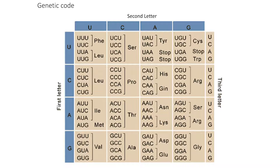This is what the genetic code looks like — always presented as a table. There are three parts to every codon, these triplets: GUU, GUC, GUA, GUG all encode the amino acid valine. AUG, a very important one, encodes methionine — all proteins start with that, as you'll see in a moment. And then there are some codons that don't code for anything: UAA, UAG, and UGA. Those stop protein synthesis, and we'll talk about those more in a moment.